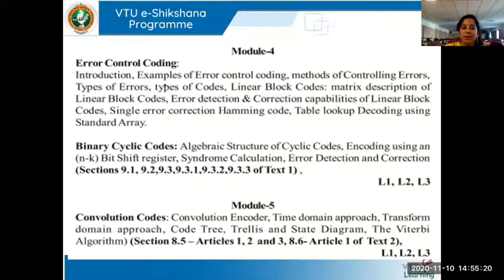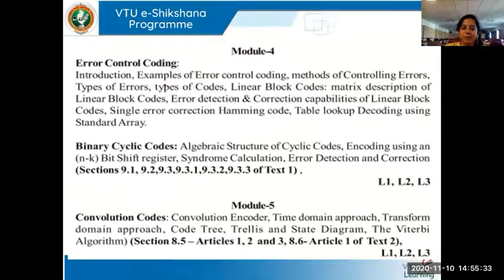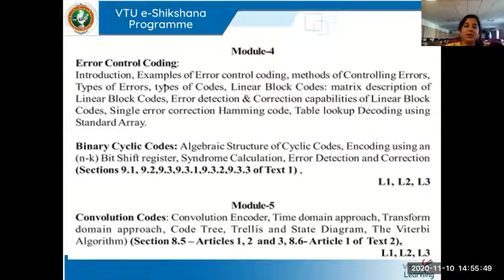I will be talking about modules four and five — that is the last course objective covering the last two modules. Module four is regarding error control coding, where we are going to encode the output of an information source by adding redundancy — adding additional bits — so that we'll be able to transmit through the channel, and at the receiver, you will be able to detect and correct errors using those extra bits.